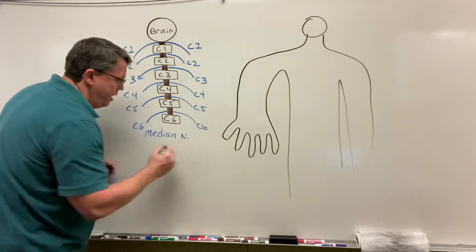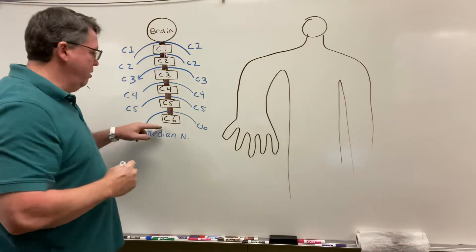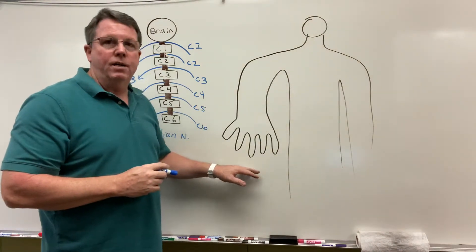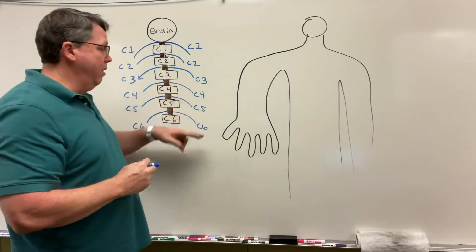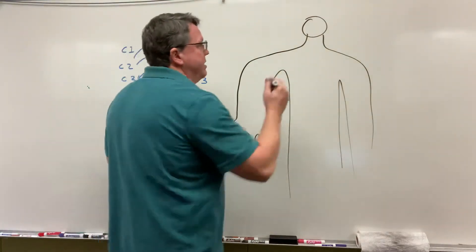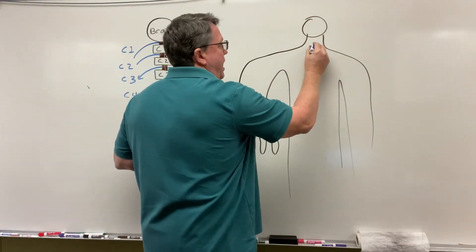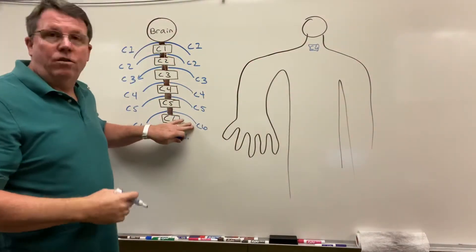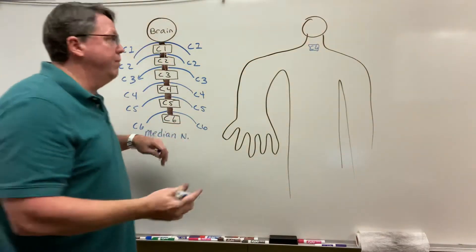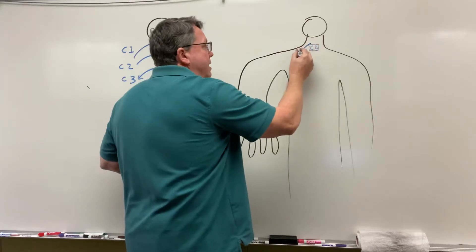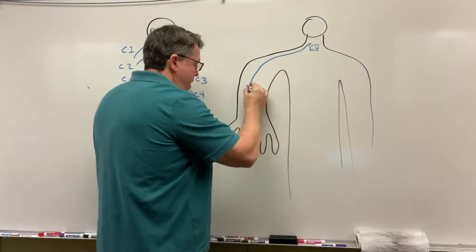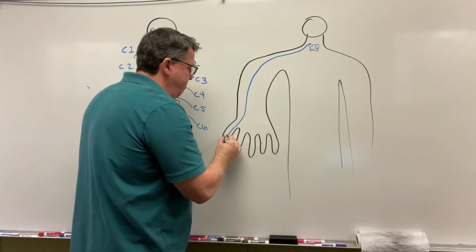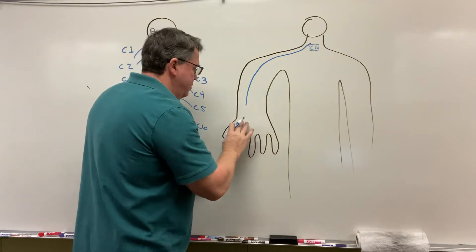This is the median nerve. If we look here, let's say that this is C6 right here. I have my C6 spinal nerve, or the median nerve, coming off from here, and it's going to come down through the shoulder and go past the wrist.